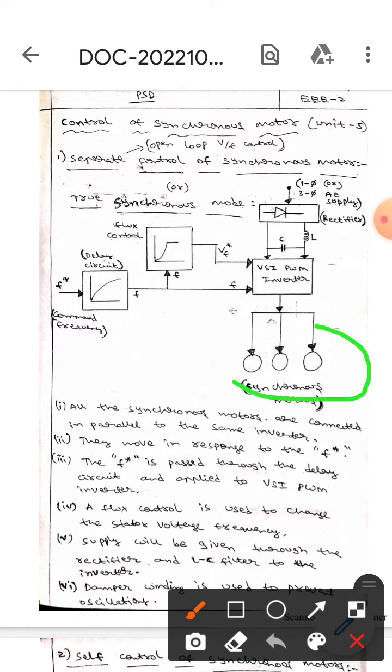The synchronous machine or synchronous motor will contain damper winding in order to protect from oscillations. This is all about the separate control of synchronous motors. I hope you understand, guys. Thank you.